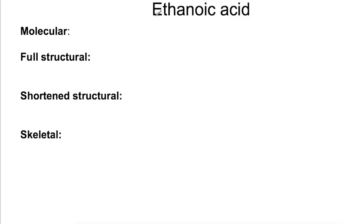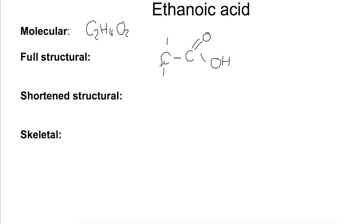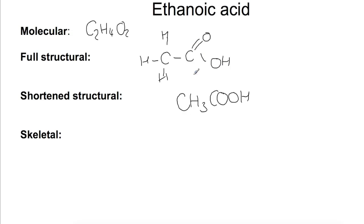Looking at a final example: ethanoic acid. Ethanoic acid has the molecular formula C2H4O2. The structural formula shows that you have two carbons — the end one has C double bond O and OH, and the second one has three hydrogens attached. To draw this as a shortened structural formula we take out all of the bonds. For the skeletal formula the only parts we have to show are those with the oxygen. So we have a carbon joined to a carbon; this carbon then has a double bond O and an OH, and the only H we're showing is the one joined to a non-carbon atom.